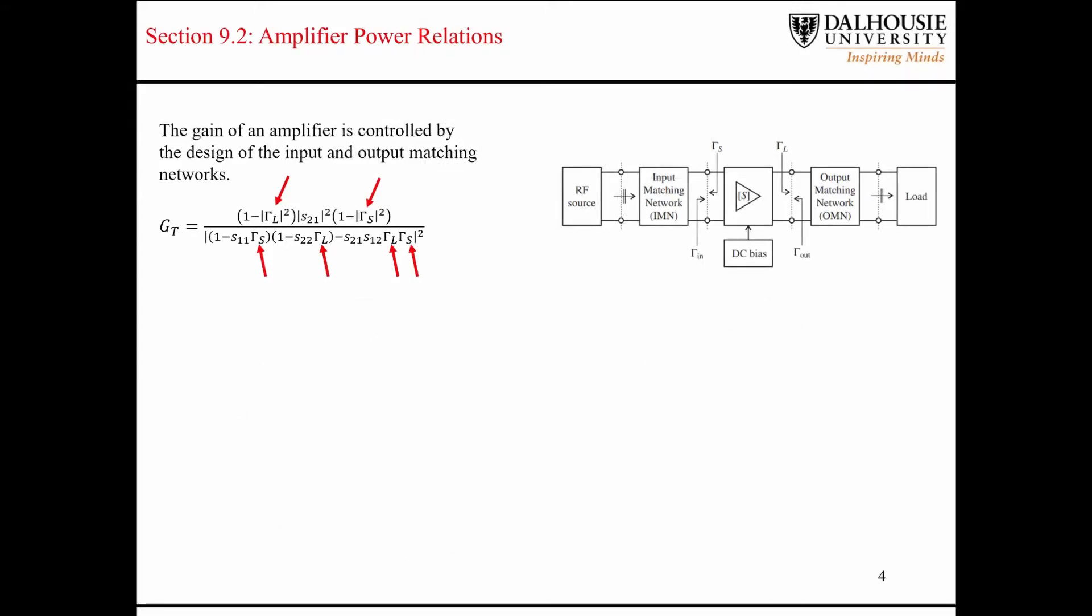What you see here is an expression for what is known as the transducer gain. And like I said before, the gain of an amplifier is controlled by the design of the input and output matching networks, which is represented here by the gamma S and the gamma L parameters.